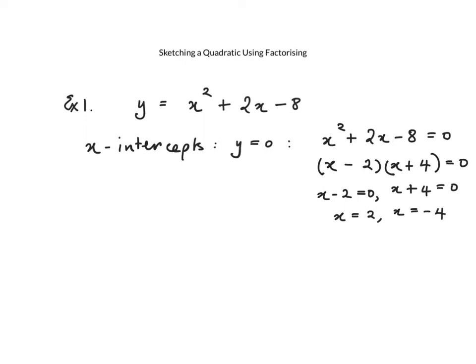That means the x-intercepts — the places where the graph cuts the x-axis — are at x equals 2 and x equals minus 4. We already know that y is 0, so the coordinates are (2, 0) and (−4, 0).